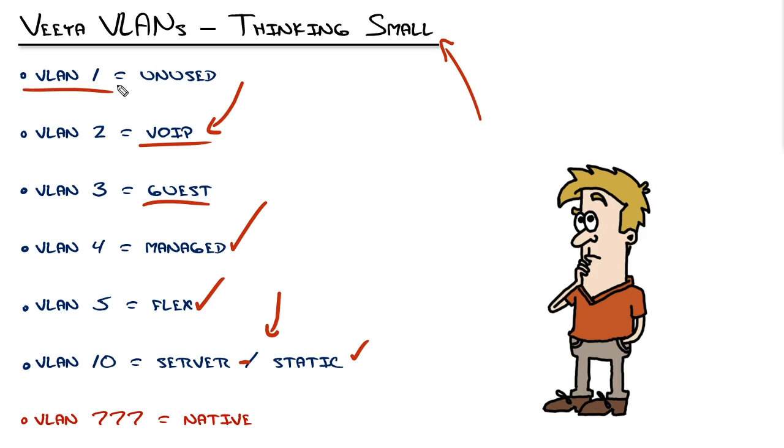So if you actually use VLAN 1 for things and maybe it's some sensitive things, maybe that's your server VLAN and you forget to configure a port and move it out of that VLAN, somebody could inadvertently plug in and gain access to the server VLAN just because of forgotten assignment.